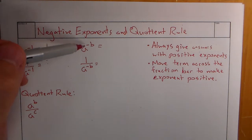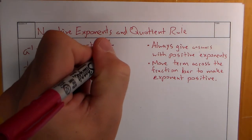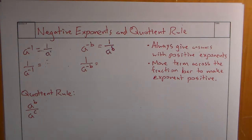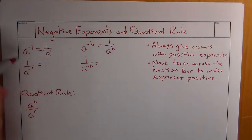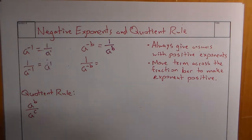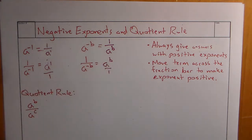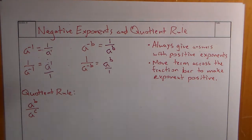What if it's not negative 1? What if it's a to the negative b? Moving it across the fraction makes it positive, so we'd say 1 over a to the b. Now sometimes we may end up with negative exponents in the denominator, but we follow the same process — it takes the reciprocal and moves across the fraction. So 1 over a to the negative 1 becomes a to the first, and 1 over a to the negative b becomes a to the b.